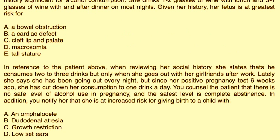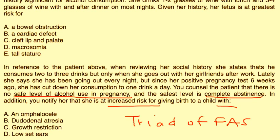Vignette three: In reference to the patient above, she states she consumes two to three drinks only when going out with girlfriends after work. Lately she has been going out every night, but since her positive pregnancy test six weeks ago she has cut down to one drink per day. You counsel her that there is no safe level of alcohol use in pregnancy and the safest option is complete abstinence. She is at increased risk for giving birth to a child with growth restriction, facial abnormalities, and CNS dysfunction — the three components of the FAS triad — and the answer here is growth restriction.